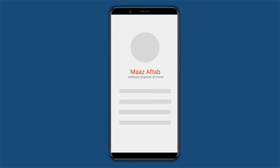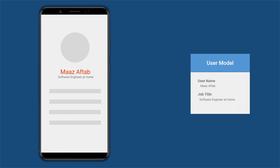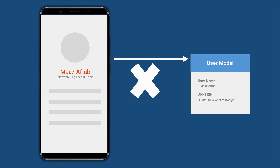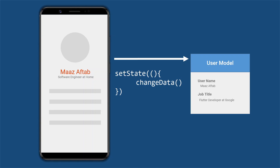Suppose we have an application showing user information on screen. The application has a data model — in our case, a user model — and the current screen uses this user model to show the user's details. But if one of the fields from this user model gets changed, like job title, would it change the UI? The simple answer is no, because in Flutter you cannot directly change or mutate the UI. You need to call setState and change the data inside it to update the UI.